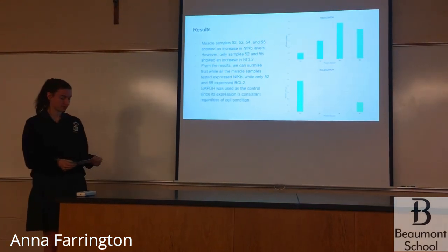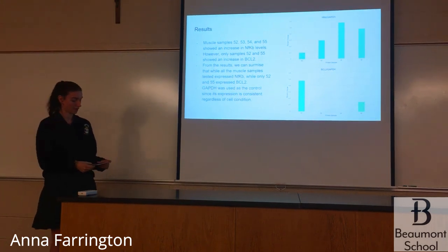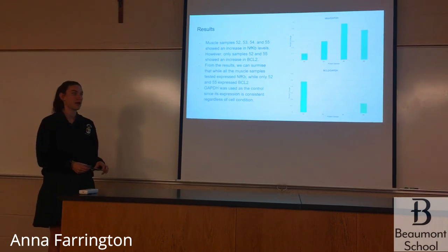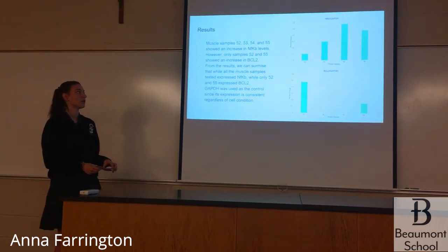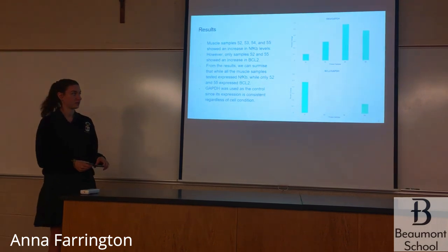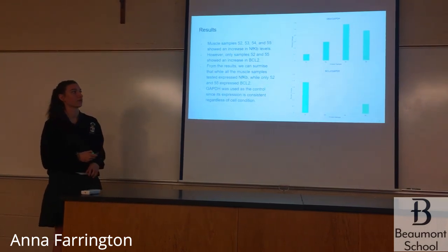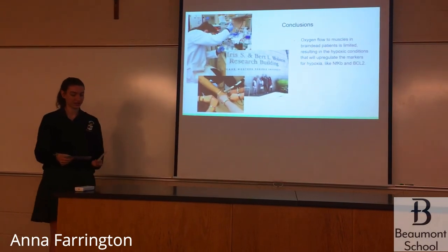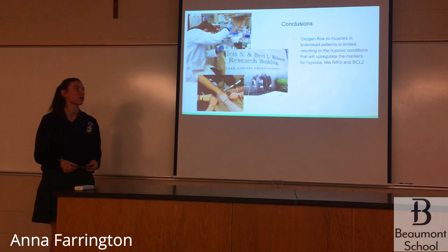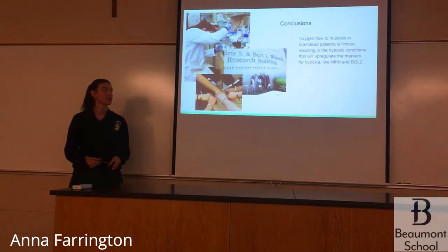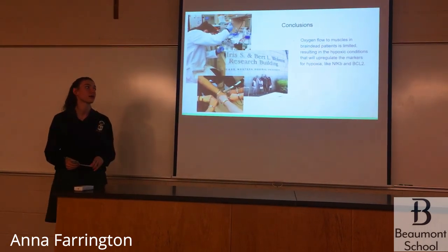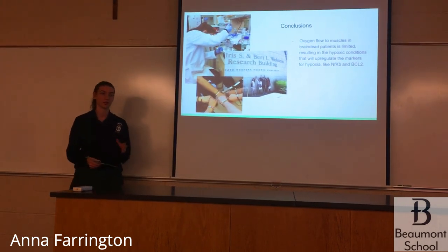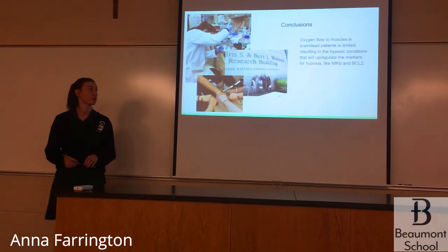For our results, NF-kappa-B was upregulated in all four of our samples, and BCL-2 was upregulated in only samples 52 and 55, as shown on the graphs. In conclusion, the oxygen flow to muscles in brain-dead patients is limited, resulting in hypoxic conditions that upregulate the markers for hypoxia like NF-kappa-B and BCL-2, as shown in the muscle samples we used.